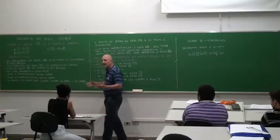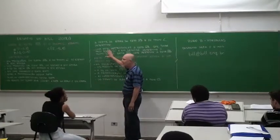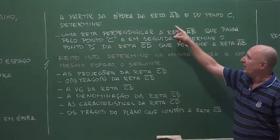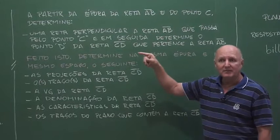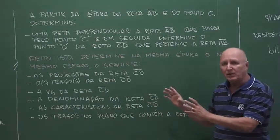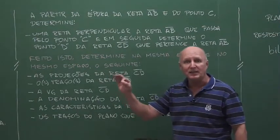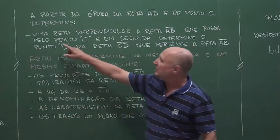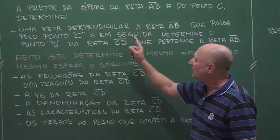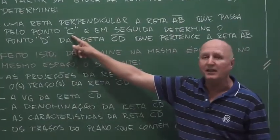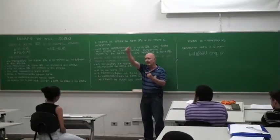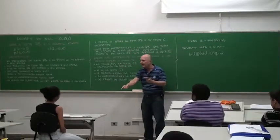After you do all this, after you determine everything in the epoch, then from the epoch you will determine — starting from the epoch — the line AB and point C. You will determine everything in the epoch. You've already done this exercise in geometric design: you have a line, a point outside the line, and from this point you will draw a perpendicular to line AB.